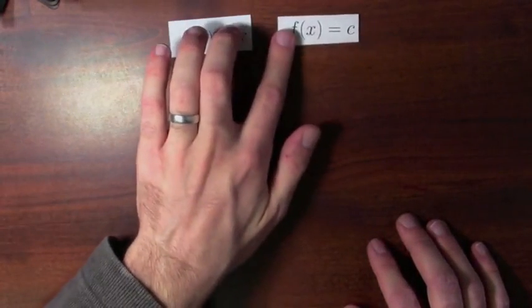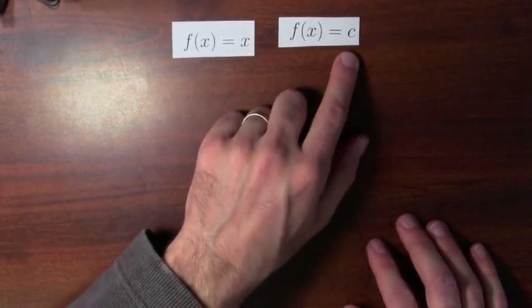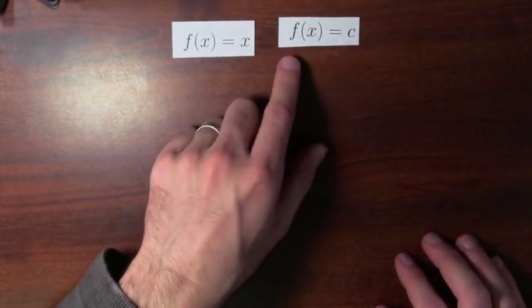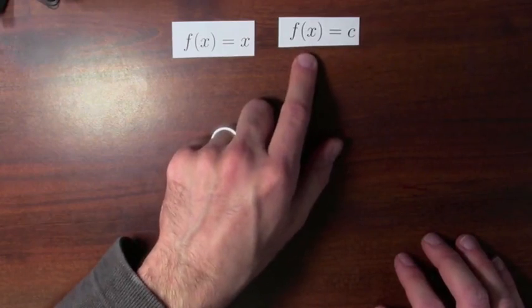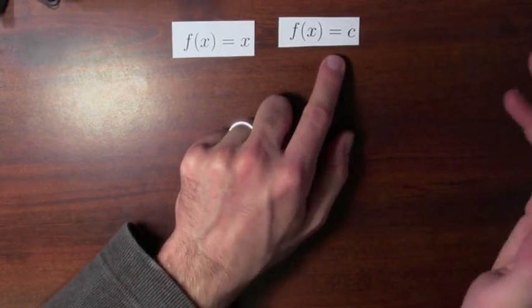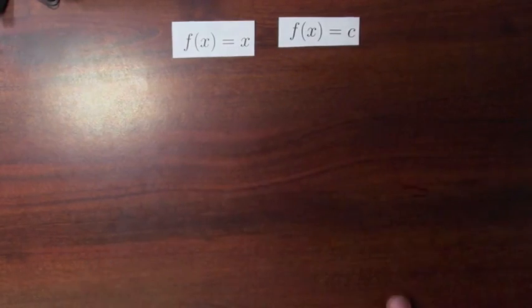Here's another function, a constant function. You pick some number c, c stands for constant. And then you can define this function, f of x equals c. Whatever you plug in for x, f just ignores that and then outputs the original value c.